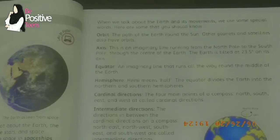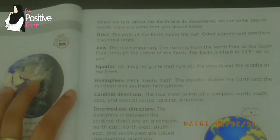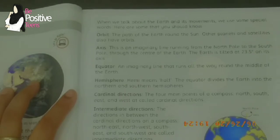When we talk about the earth and its movements, we use some special words. The first one is orbit — the path of the earth around the sun. Other planets and satellites also have orbits. Orbit is an imaginary path; it does not actually exist in the solar system. We just imagine there is a path on which the earth moves around the sun, and the moon moves around the earth.